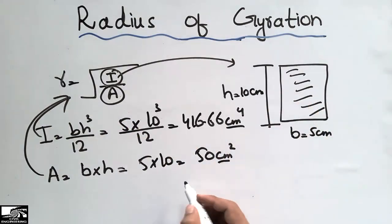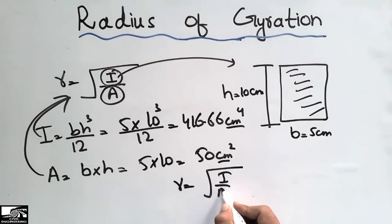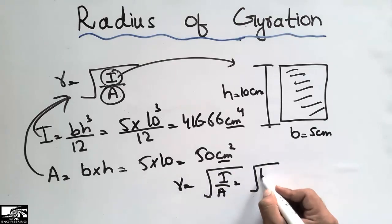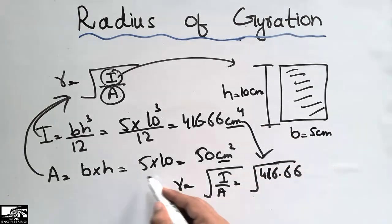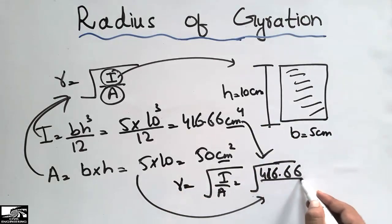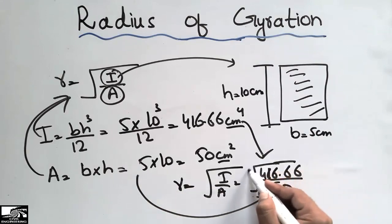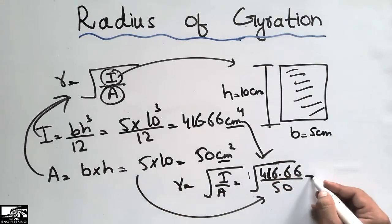Radius of gyration comes out to be I divided by A. When I put this value, 416.66 for the moment of inertia, divided by area which is 50, and taking the square root, we will get the answer.